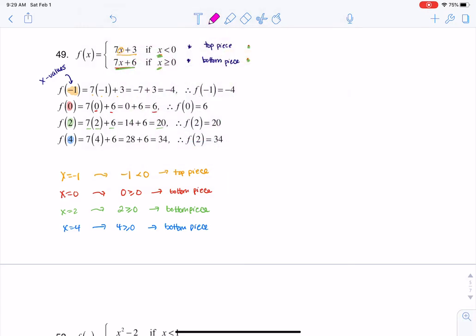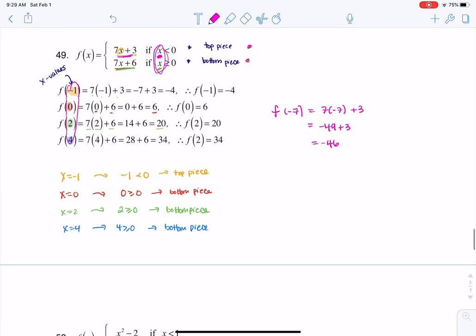And that's why I'm plugging into that bottom function. And if you wanted one more example of something that you would plug into the top function, if I asked you for f of negative 7, let's just do an extra one. Negative 7 is less than 0, so I need to plug into that top piece, and that would give me negative 49 plus 3, that would leave me with negative 46. So it's all a matter of take a look at the x values given to you here and decide top piece or bottom piece.